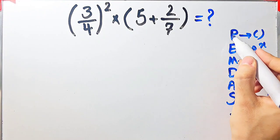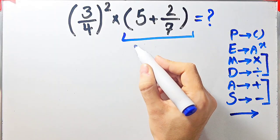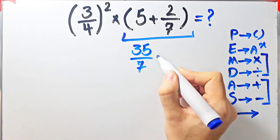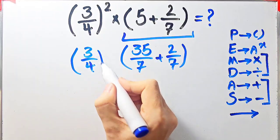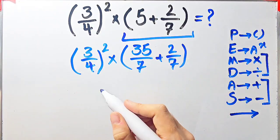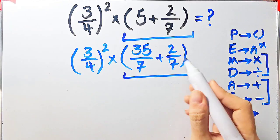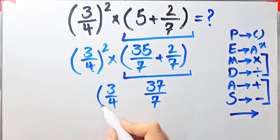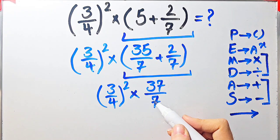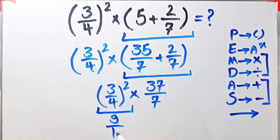According to PEMDAS, first we simplify the parenthesis: 5 plus 2 over 7. Since the denominator is 7, we write 5 as 35 over 7. So we have 35 over 7 plus 2 over 7 equals 37 over 7. Now the question is: 3 over 4 to the power of 2, times 37 over 7. We now have exponent and multiplication. We simplify the exponent first: 3 over 4 to the power of 2 equals 9 over 16. Now we have 9 over 16 times 37 over 7.